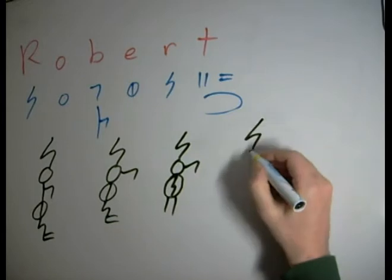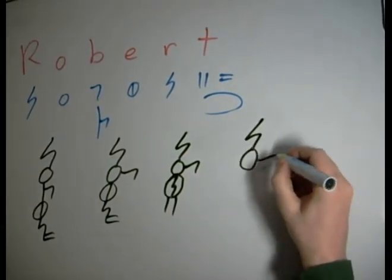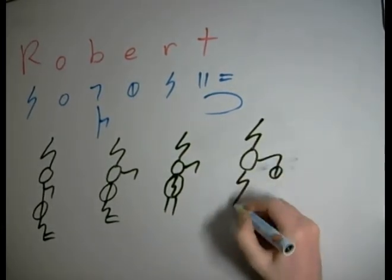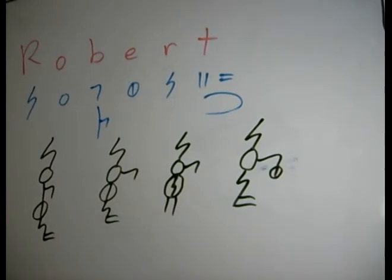We could also go R, O, B, E, R, T. You can create side chains to create many different versions of the word. It can go on and on.